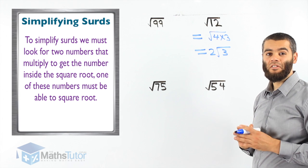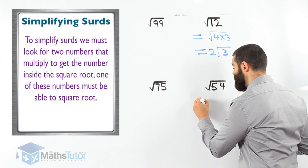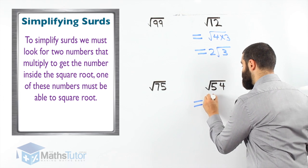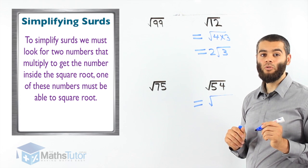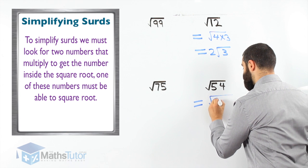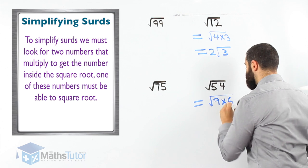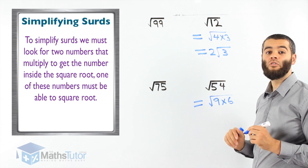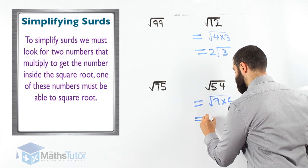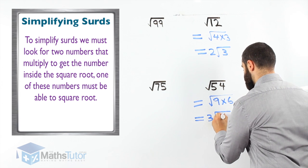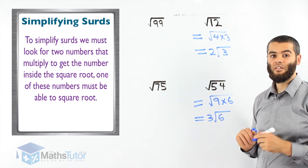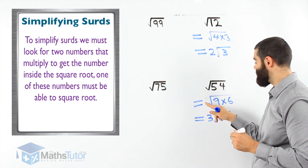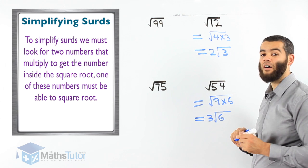The next one: root 54. We are asked to simplify. What do we do? We look for two numbers — the factors of 54 — where one of them must square root. We know 9 times 6 equals 54. Does one of these square root? Yes — the 9 square roots. The square root of 9 is 3. So our answer is 3 root 6. 9 times 6 makes 54, the 9 comes out as 3, giving us 3 root 6 as our final answer.